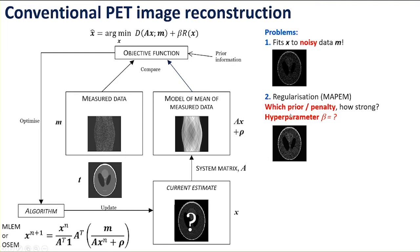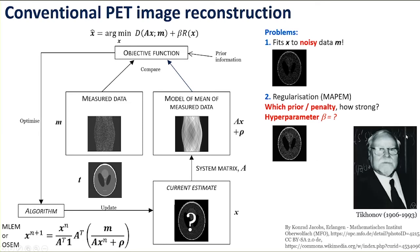Furthermore, we don't know how strongly to enforce this prior information. What it's doing is penalising overfitting — if X overfits to the data vector M, if it's too noisy, we penalise it using this regularisation prior. A very conventional kind of prior used in inverse problems would be something like a quadratic, where we look at the L2 norm of all pixel values — attributed to Tikhonov — a famous regularisation strategy for inverse problems.